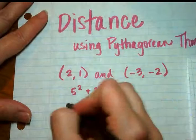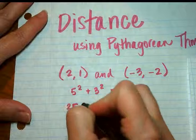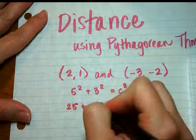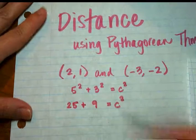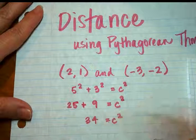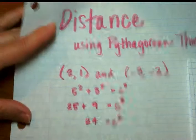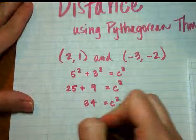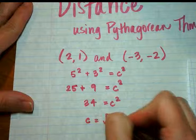So 5 squared is 25. 3 squared is 9. If I add those two together, I get 34. And so the length of C is going to be the square root of 34.